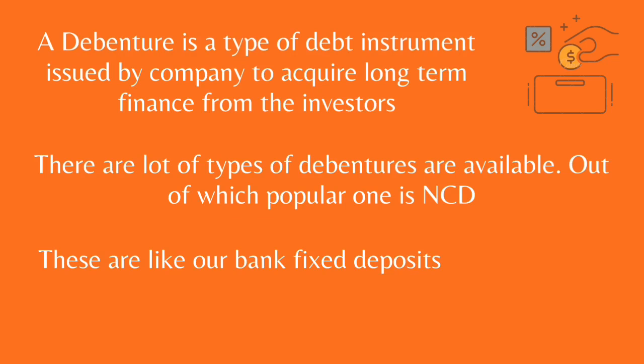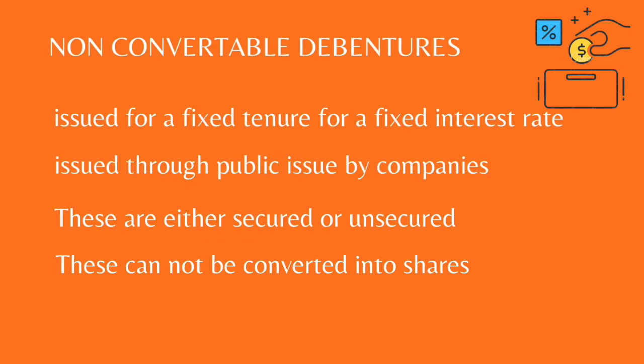People who have money and want to take risk will go for NCDs. NCD stands for non-convertible debenture. It is issued for a fixed tenure at a fixed interest rate, through a public issue, and is also available in the secondary market. NCDs come in two categories: secured, which are backed by the company's assets, and unsecured, which have no such security. They cannot be converted into shares at any cost — that's why they are called non-convertible debentures.